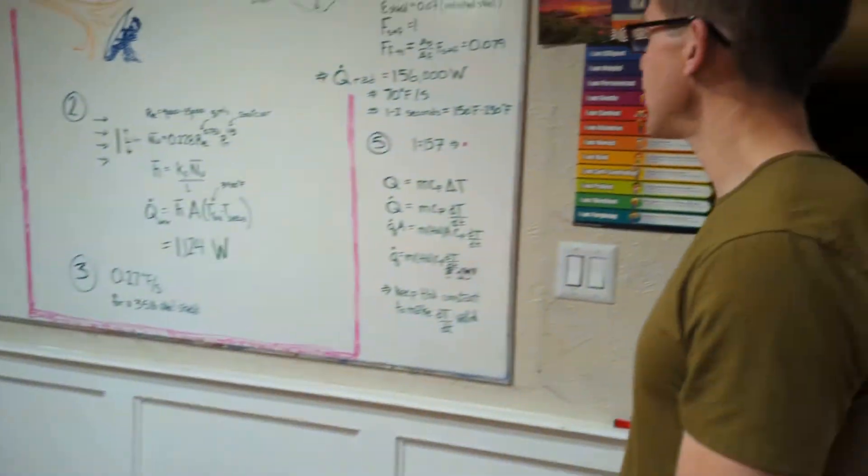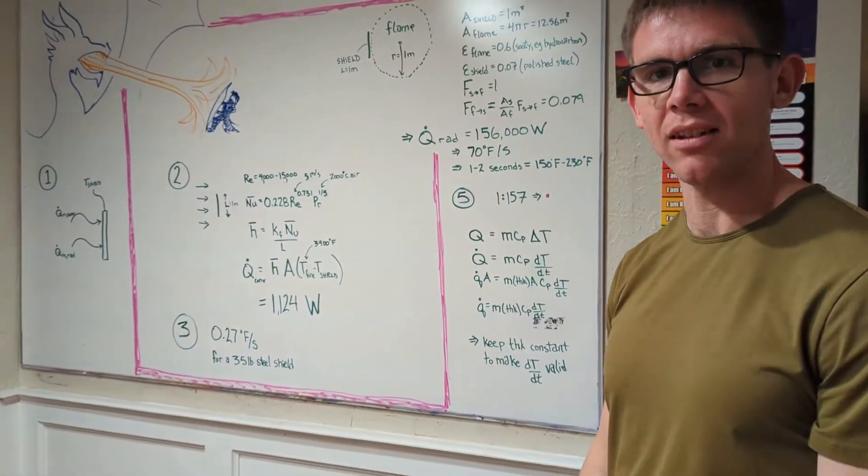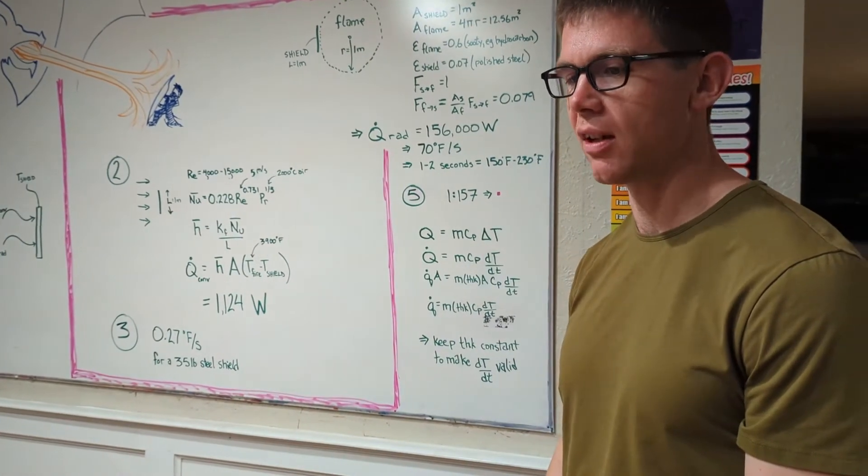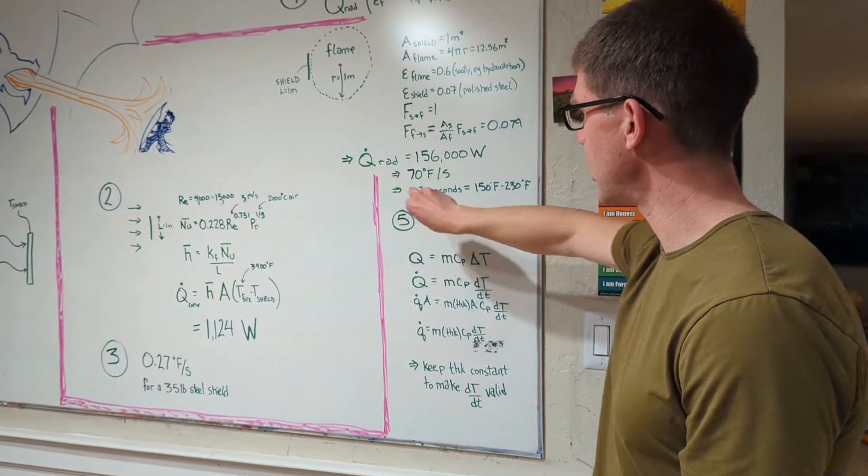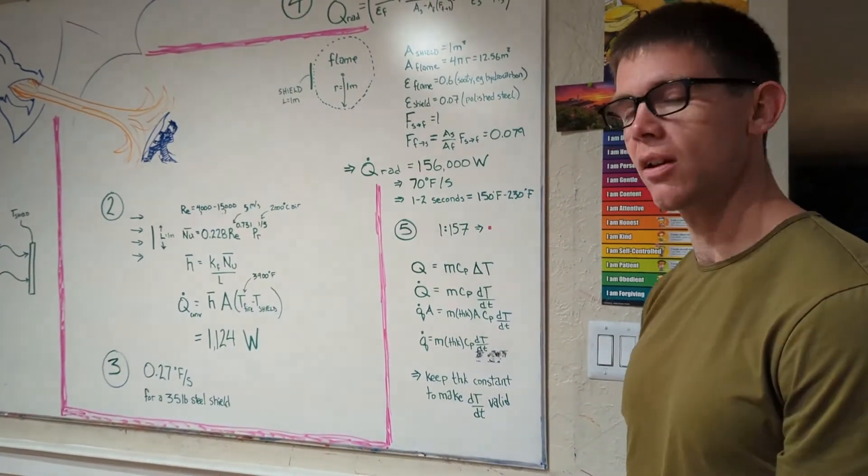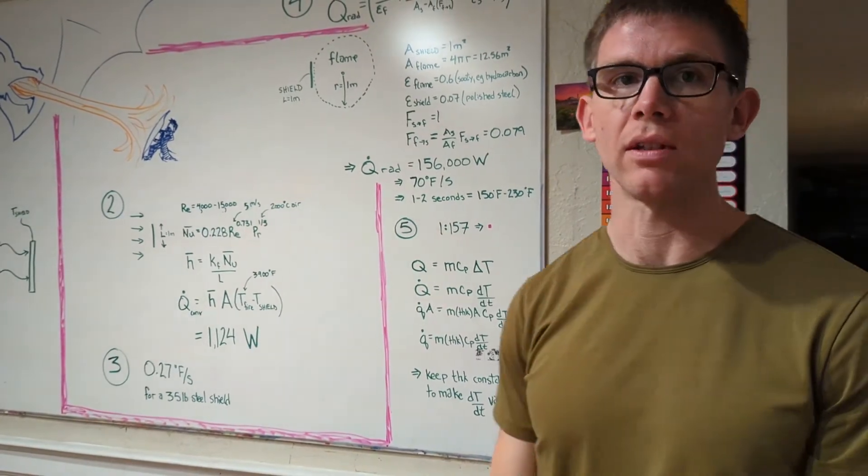But I made a couple mistakes with that. First I used aluminum instead of steel which has a lot less heat capacity than steel so that makes the shield melt faster. I also geometrically scaled. So I just made a 157 scale model of the shield which does not give you valid answers for heat transfer.